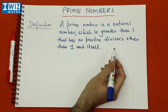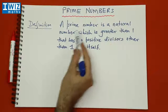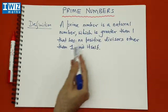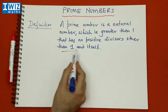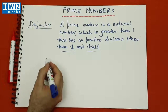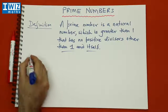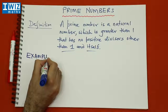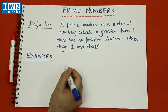The definition of a prime number is: a natural number which is greater than one that has no positive divisors other than one and itself. The best way to get a handle on prime numbers is to do a few examples, so we'll consider a few examples and see whether these numbers are prime numbers or not.